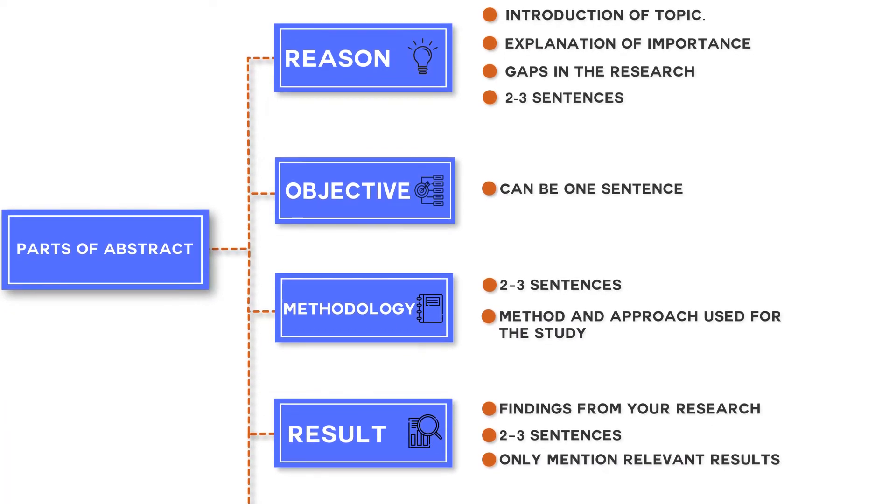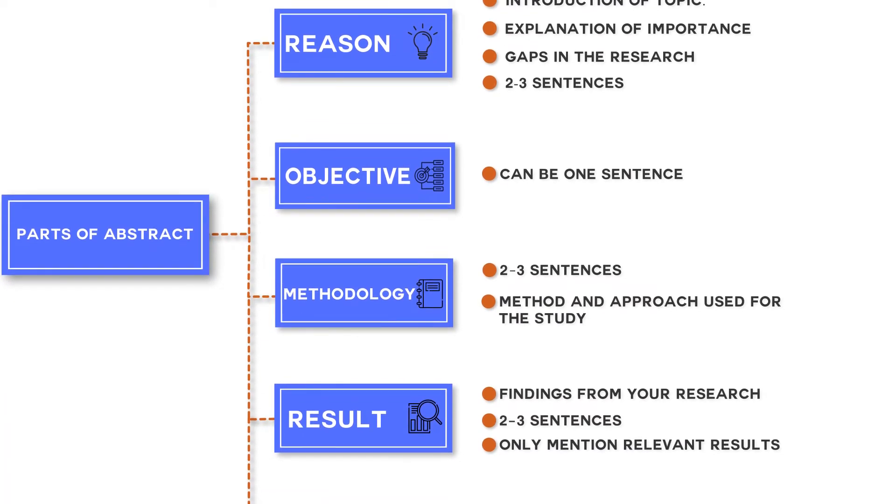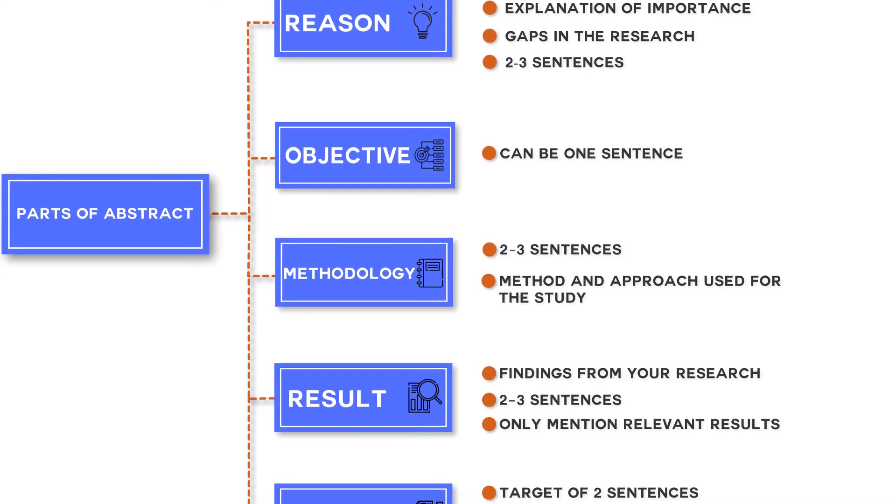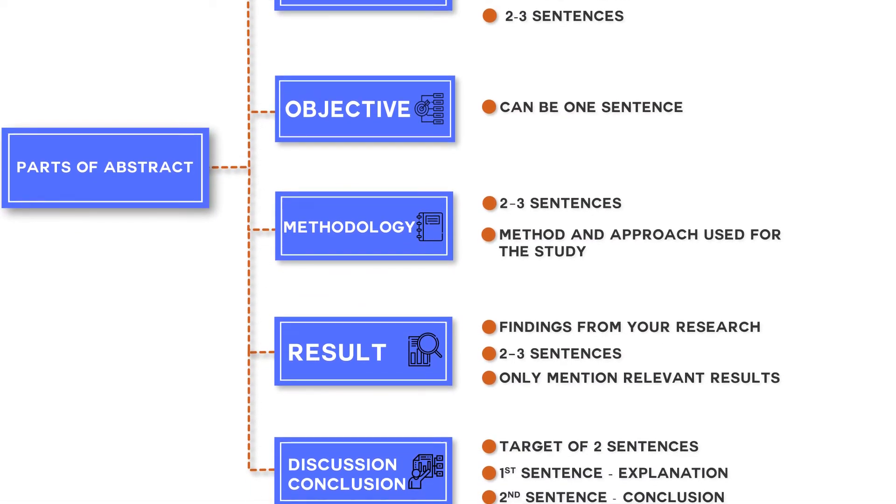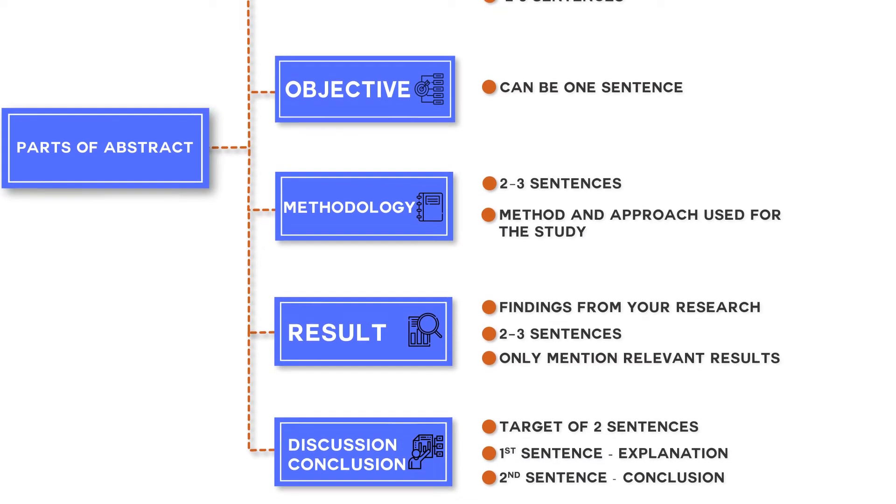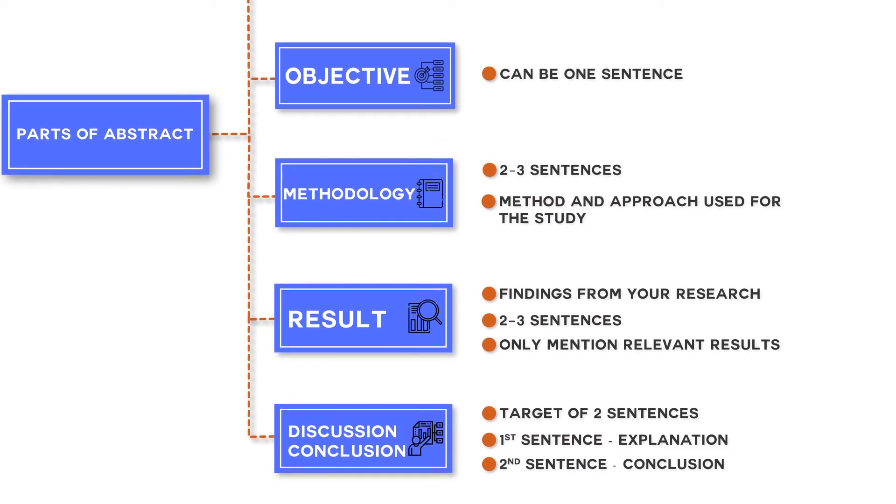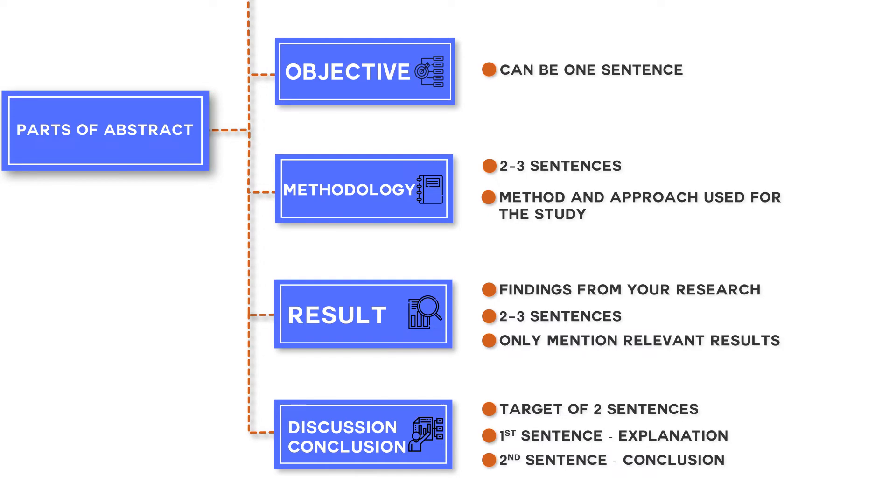So in summary, an abstract includes reason for writing a paper in two to three sentences, methods in two to three sentences, results in two to three sentences, discussion and conclusion in two to three sentences.